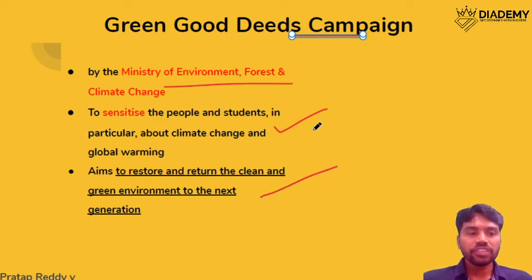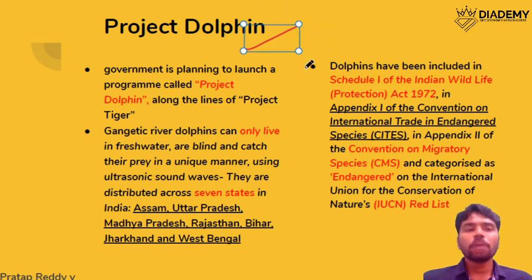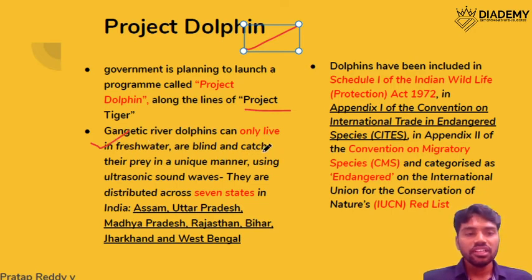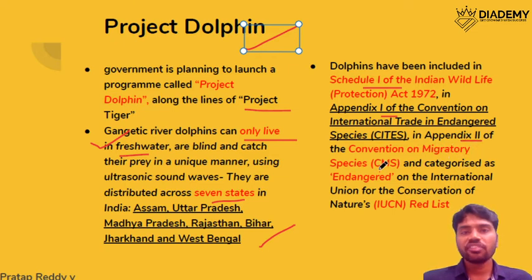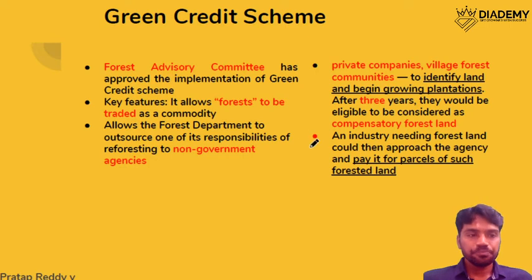Project Dolphin is planned in line with Project Tiger. The Gangetic dolphin lives only in fresh water and is considered the national aquatic animal. It has been found in seven states: Assam, Uttar Pradesh, Madhya Pradesh, Rajasthan, Bihar, Jharkhand, and West Bengal. It is protected under Schedule 1 of the Wildlife Protection Act, listed under Appendix 2 of the CMS (Bonn Convention), and is regarded as Endangered on the IUCN Red List.